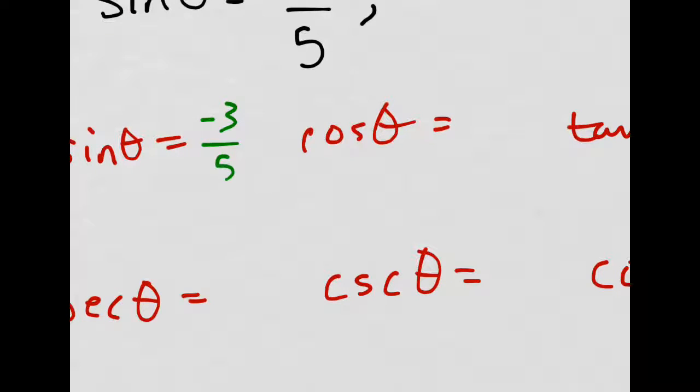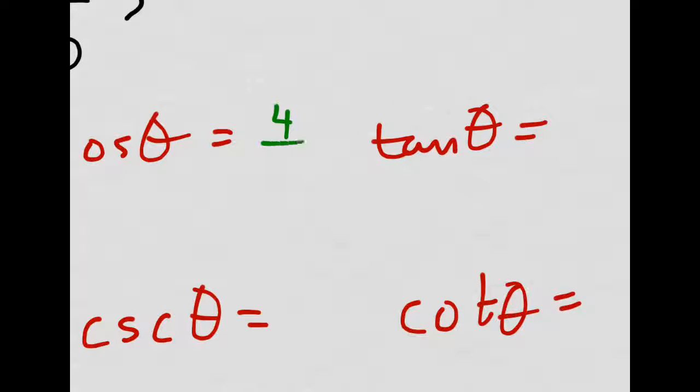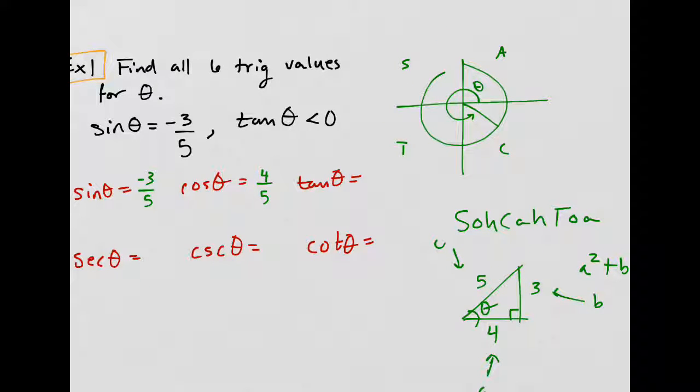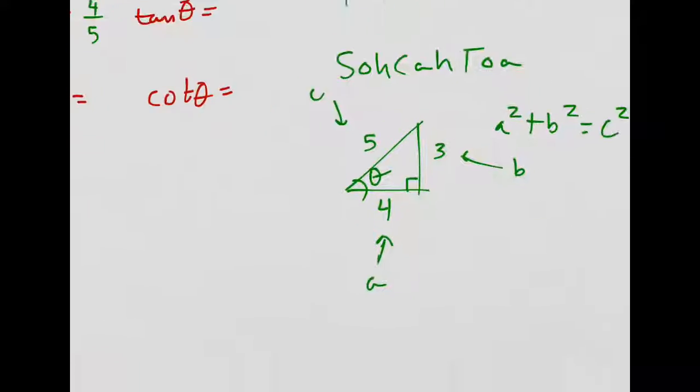This we already have. Cosine of theta - that's adjacent over hypotenuse, 4 over 5. So that would be 4 over 5. However, would it be positive? Yes, it would be positive because cosine is positive in the fourth quadrant.